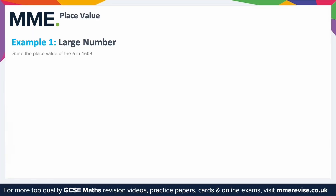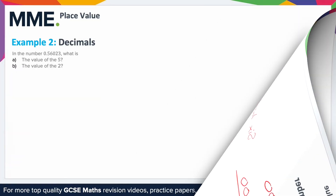Example one — large number: state the place value of the six in 4609. The easiest way is to turn every other digit into a zero, giving 0600, then remove the leading zero, so the answer is 600. Another way is to identify each column: the nine is in the ones column, the zero is in the tens column, and the six is in the hundreds column — so it's six hundreds.